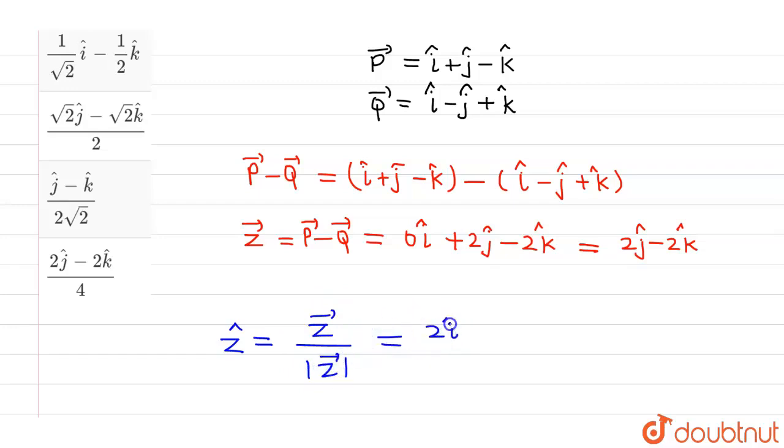Now since Z vector is 2 j cap minus 2 k cap, this is 2 j cap minus 2 k cap divided by the magnitude of this vector, which is root of 2 squared (which is 4) plus minus 2 squared (which is again 4). So this will be equal to 2 j cap minus 2 k cap divided by 2 root 2.